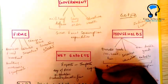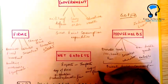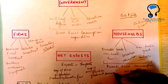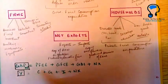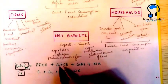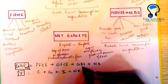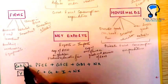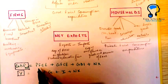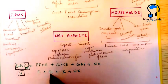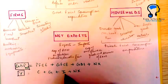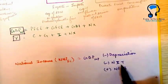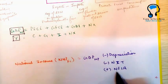So GDP at MP equals Private Final Consumption Expenditure (C) plus Government Final Consumption Expenditure (G) plus Gross Domestic Investment (I) plus Net Exports (NX). GDP can be represented as Y = C + G + I + NX. And NNP at factor cost equals GDP minus depreciation minus net indirect taxes plus net factor income from abroad.